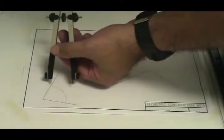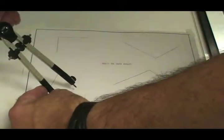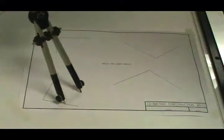Then, where the arc intersects one side, one line of the angle, take and draw another arc, and then repeat on the other line where the arc intersects that line.